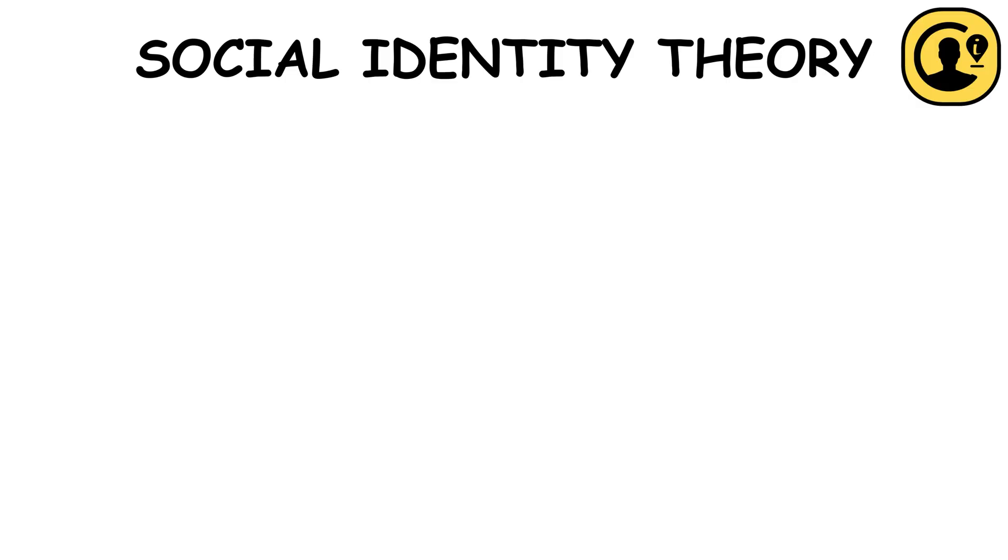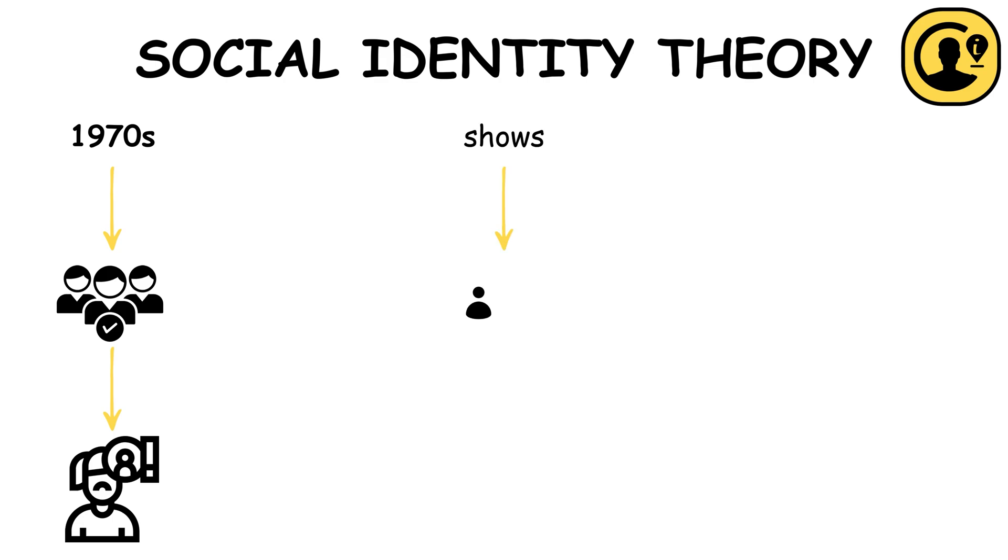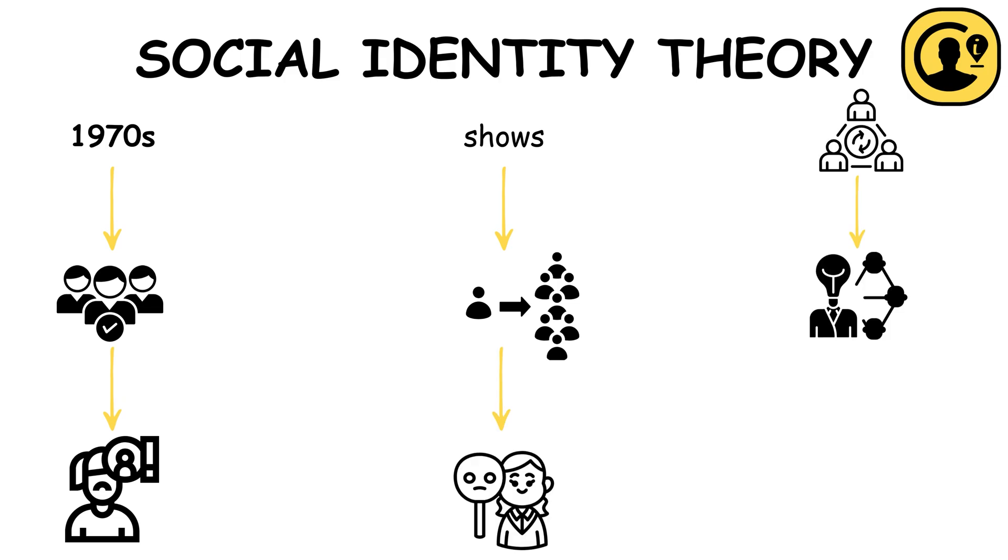Social Identity Theory, developed in the 1970s, explores how group membership affects self-concept and behavior. It shows how individuals categorize themselves and others into groups, leading to biases and group dynamics that influence behavior and social interactions.